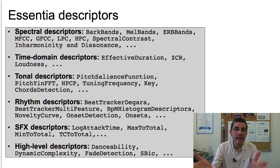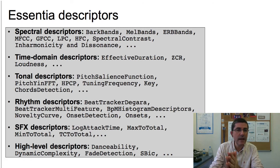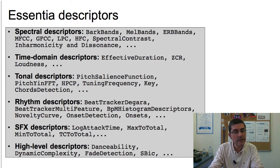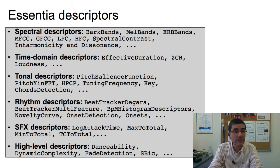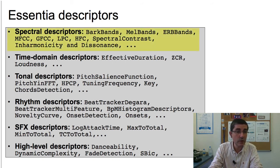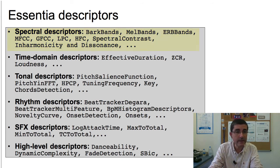Here we present some of the most common descriptors available in Essentia, grouped into categories. For example, we have features extracted from the spectrum — spectral descriptors — such as bark bands, mel bands, MFCCs, LPC, and more. There are many features based on spectral characteristics of the sound.